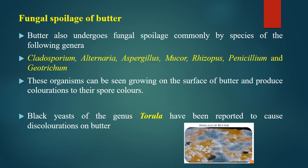Butter also undergoes fungal spoilage, commonly by species of the following genera: Cladosporium, Alternaria, Aspergillus, Mucor, Rhizopus, Penicillium, and Geotrichum. These organisms can be seen growing on the surface of butter and produce colorations corresponding to their spore colors. Black yeasts of the genus Torula have also been reported to cause discoloration on butter. These are some of the common spoilage types caused by fungi in butter.